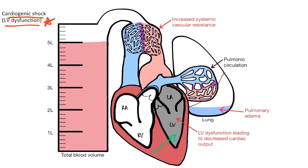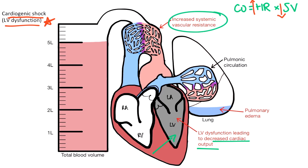In left ventricular dysfunction, the pump failure results in decreased stroke volume, which causes decreased cardiac output. Recall the equation: cardiac output equals heart rate times stroke volume. The way the body tries to increase cardiac output when stroke volume is low is by increasing the heart rate via activation of the sympathetic nervous system. The activation of the sympathetic nervous system results in an increased heart rate, cardiac contractility, and salt and fluid retention via the kidneys. This increases the systemic vascular resistance and also increases the left ventricular preload.